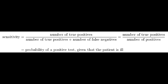The mnemonic to remember sensitivity is PID (positive in disease) and SNOUT (sensitivity rules out disease). In a test with 100% sensitivity, the false negative would be 0, meaning all negatives are true negatives.